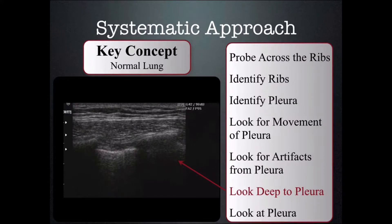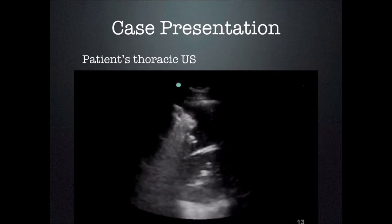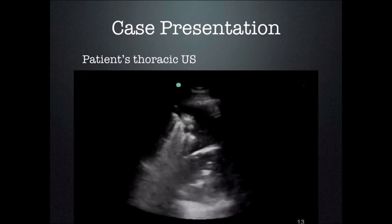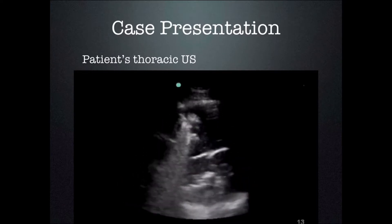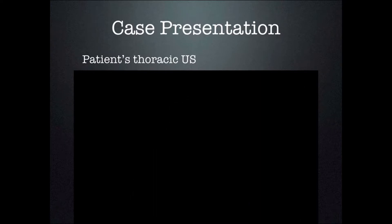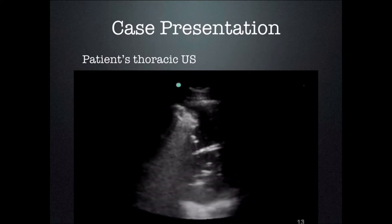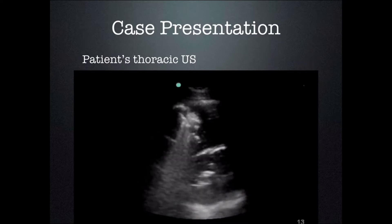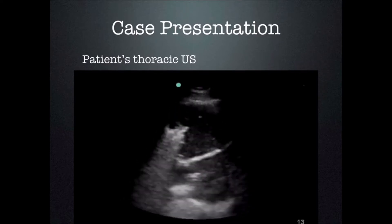We're looking at the patient's ultrasound using a phased array or cardiac probe. Cardiac probes do not image the pleura very well because of the narrow field of view, so we don't see the pleura very well — it's the hyperechoic line at the top of the screen. We see something that looks like a lung rocket, but remember lung rockets must arise from the pleural line, and in this case they do not arise from the pleural line — they are deep to the pleural line.